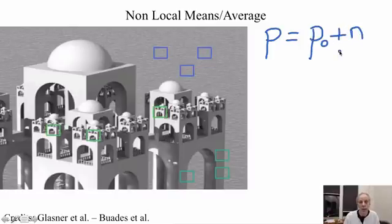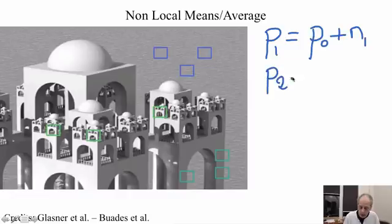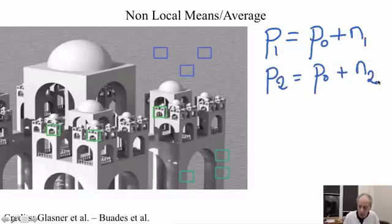But the noise, basically, is a random variable, so it's always slightly different. So we observe the pixel a number of times, we observe one with a certain noise. We observe it again, same pixel, but with a different noise.